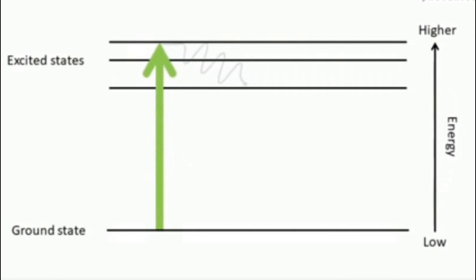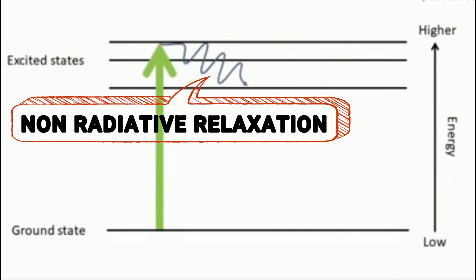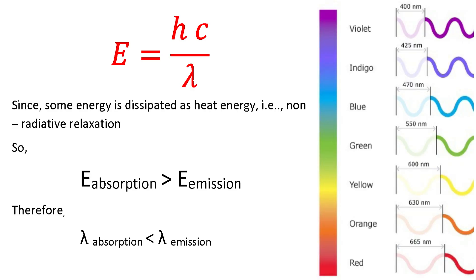In higher state, the atom may lose some energy due to non-radiative relaxation, that is in terms of heat energy. Due to this non-radiative relaxation, the energy of absorption is greater than the energy of emission.